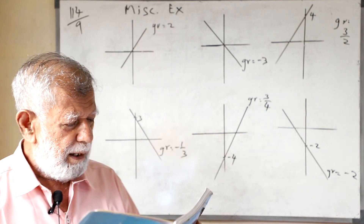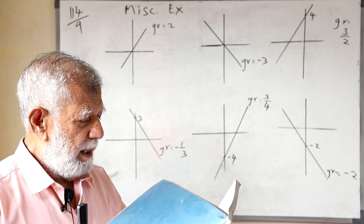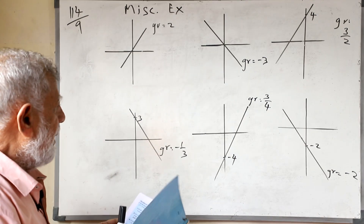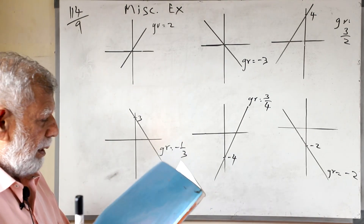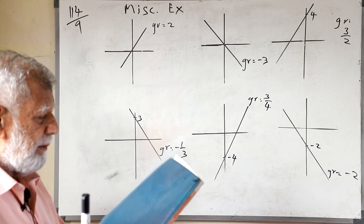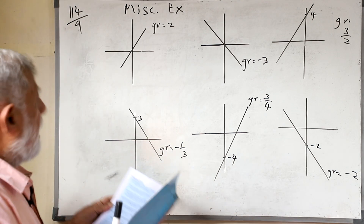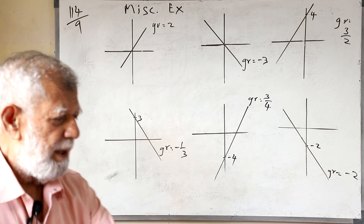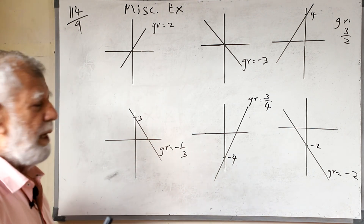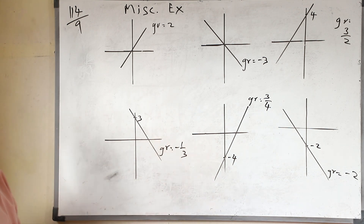If you look at your book, children, in the miscellaneous lesson you will see the graph lines. For the second question, we are asked to write the equation of the functions of the graph sketched below. So we have to only write the equation of this graph, and you know the formula equation of all the graphs.